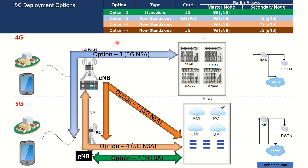Let's look into the deployment options again in a better visual way. Here we see that Option 2 is a standalone option where we have direct communication between the 5G network — between the gNodeB 5G NR and the 5G core network. In this case, there is only a master node; there is no secondary node available in the radio access network.